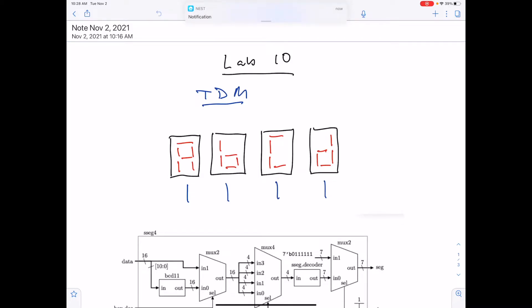Walkthrough video for lab 10. Lab 10, we use time division multiplexing to control the display of the seven segment digits on the basis three board.